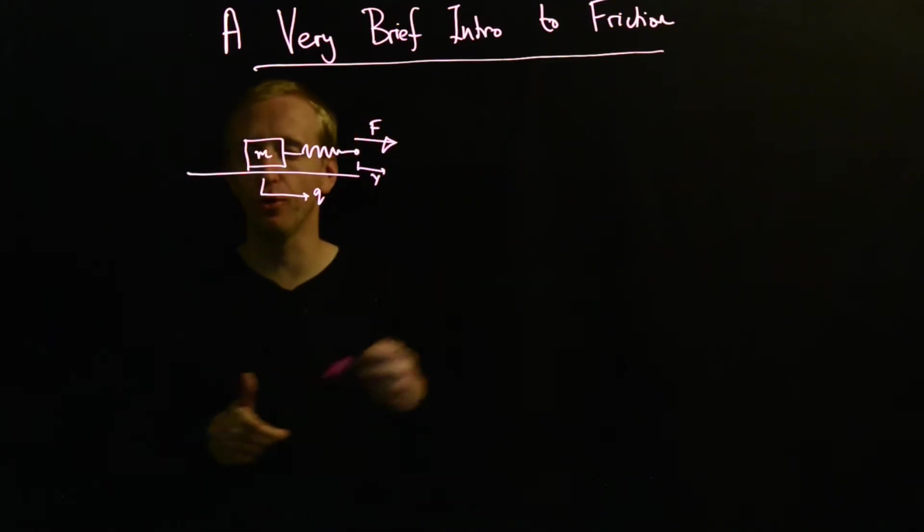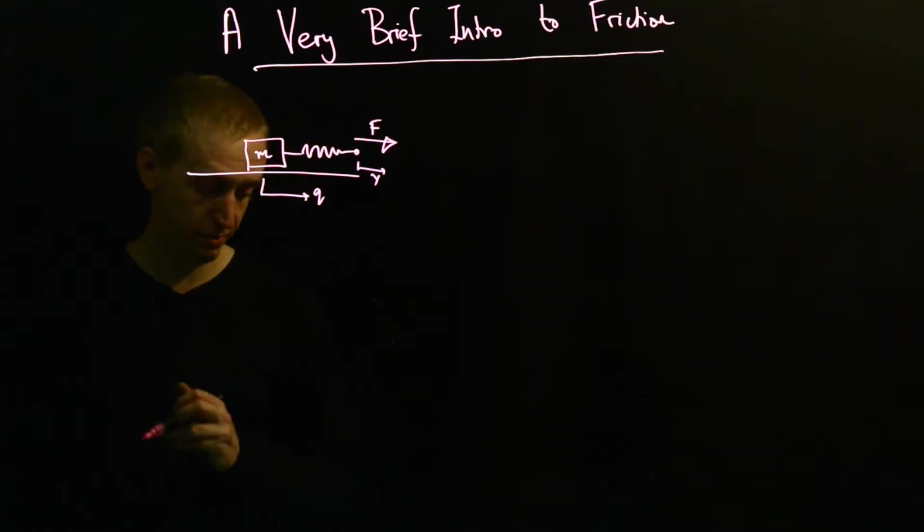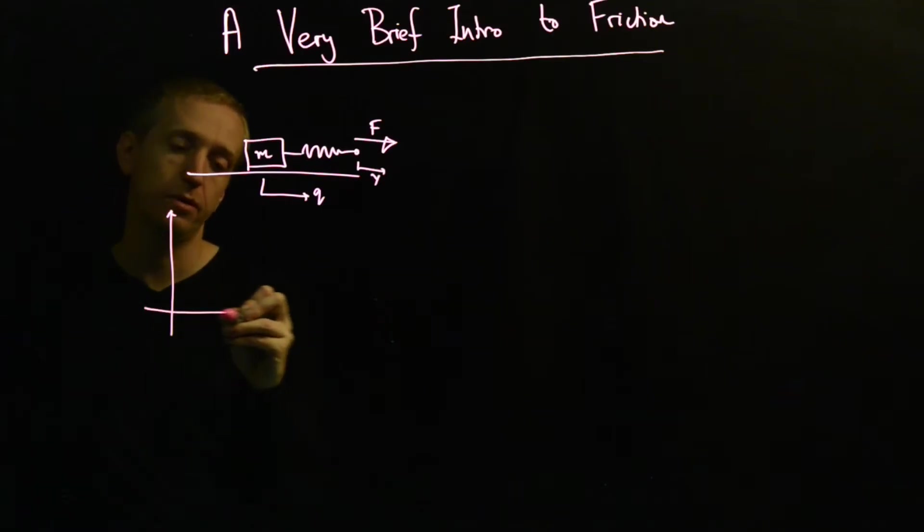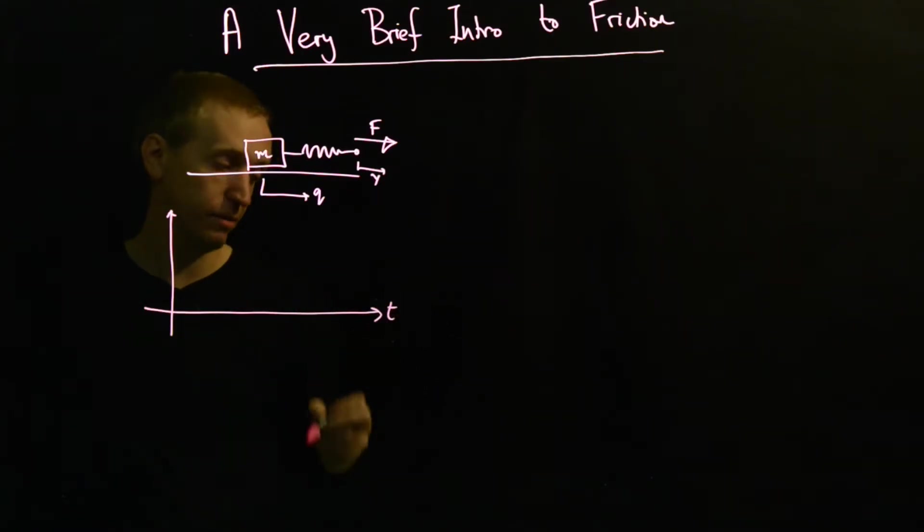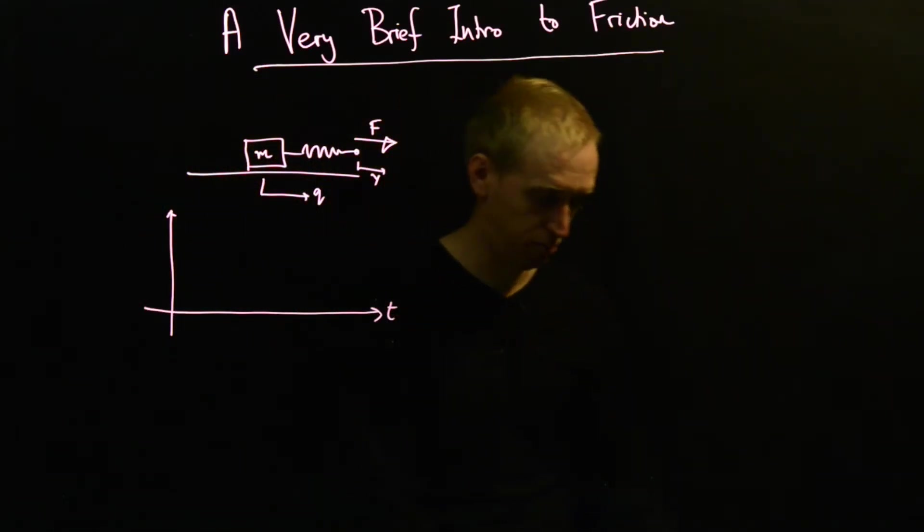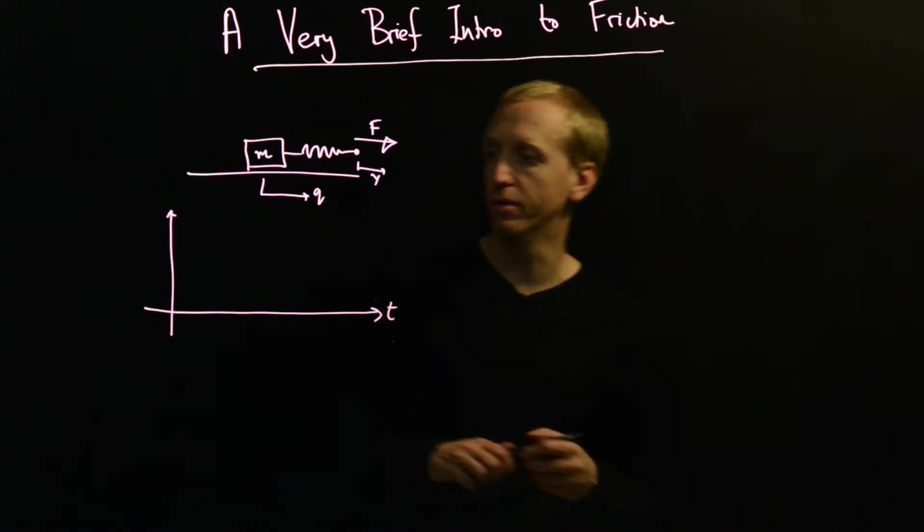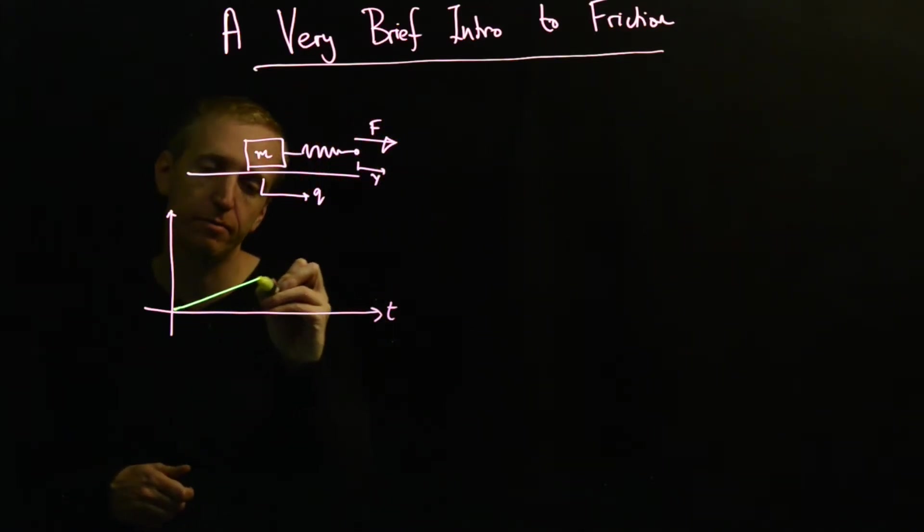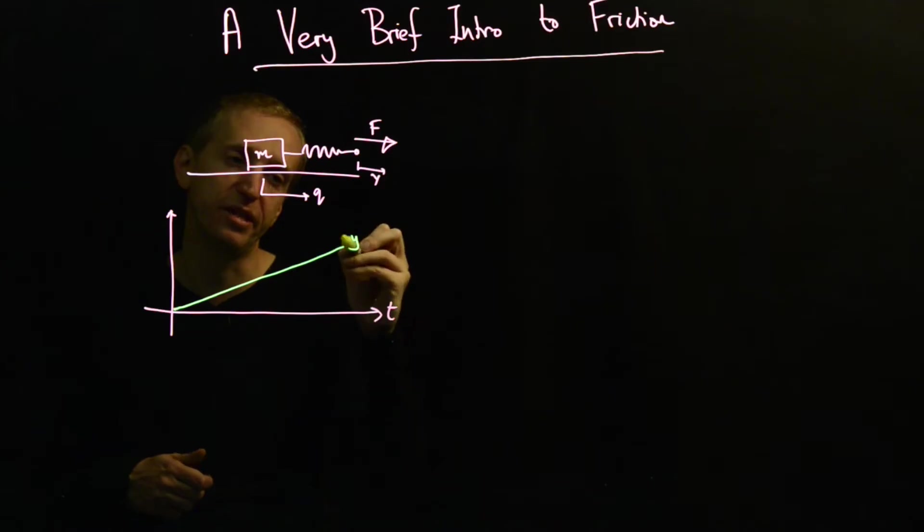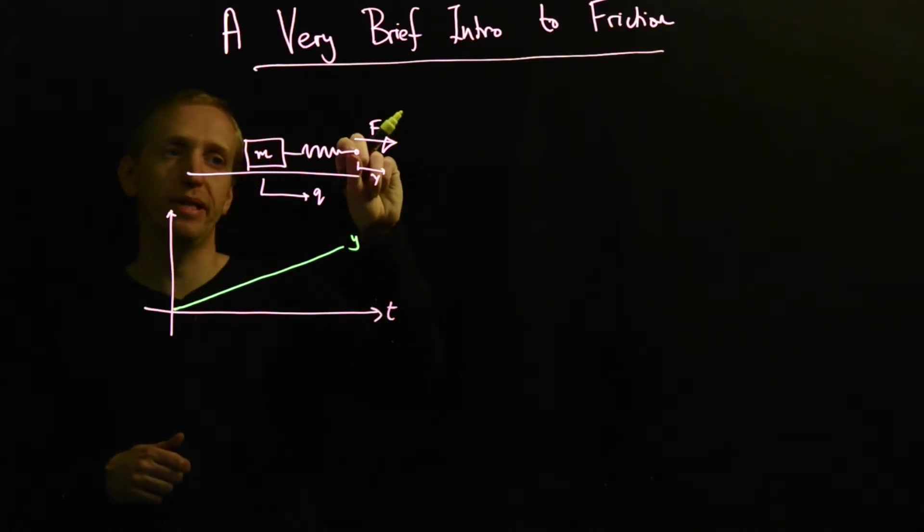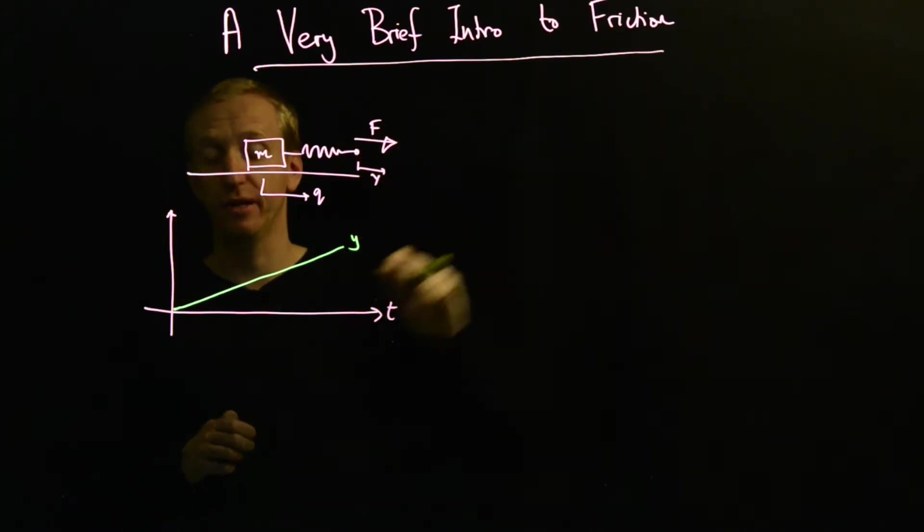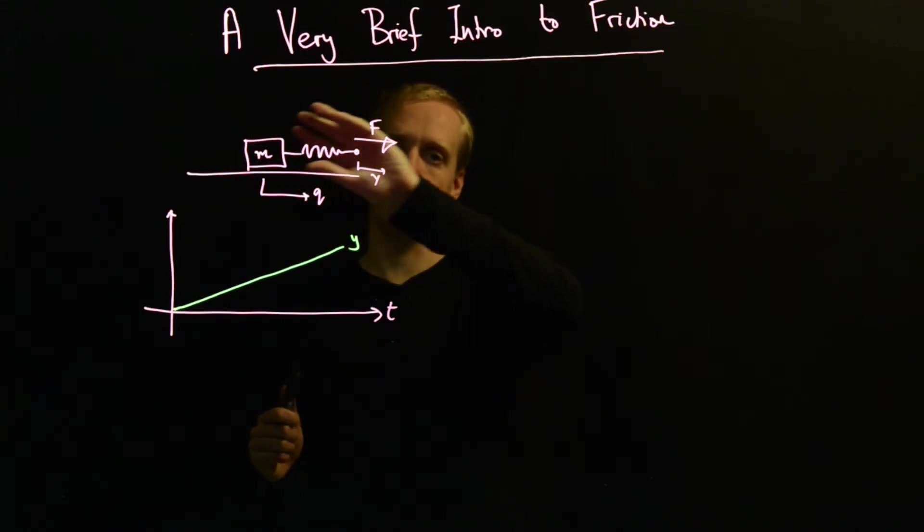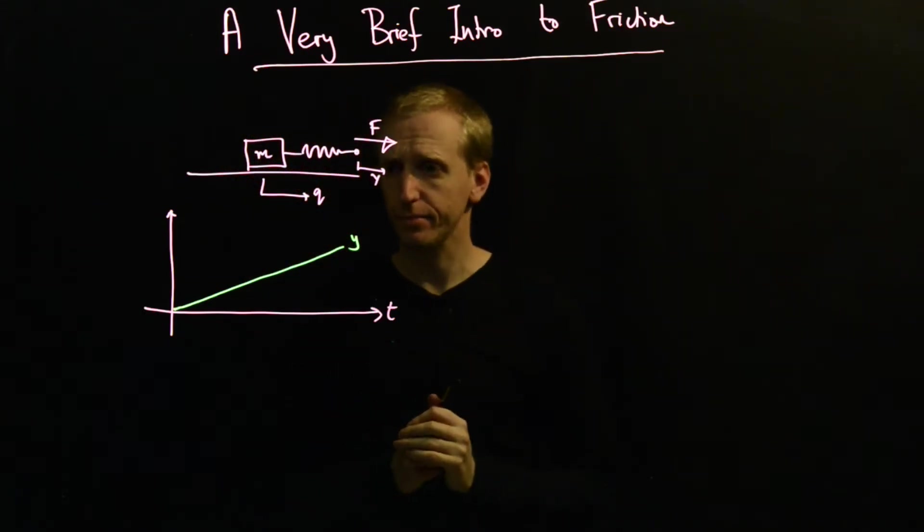So if we were to draw all of this into a picture, what might we get? Let's put time here and let's put what we want to happen. We're pulling the end of this spring just at a constant rate y. We want to pull the mass along at a constant velocity.